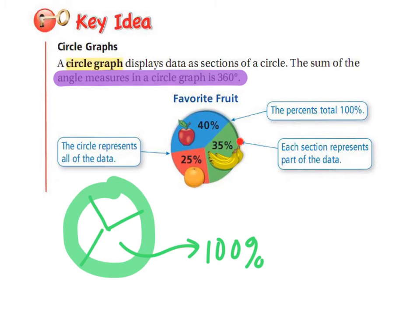These are the part of people that chose bananas, the part that chose oranges. If I looked at the angles in a circle graph, we talked about angles a little bit last year - this angle plus this angle plus this angle would equal 360 degrees because there are 360 degrees in a circle. Make sure you put all of those things in your notes.